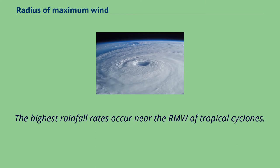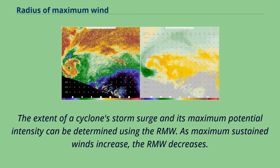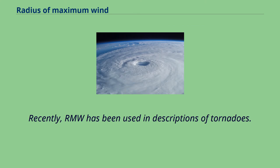The highest rainfall rates occur near the RMW of tropical cyclones. The extent of a cyclone's storm surge and its maximum potential intensity can be determined using the RMW. As maximum sustained winds increase, the RMW decreases. Recently, RMW has also been used in descriptions of tornadoes.